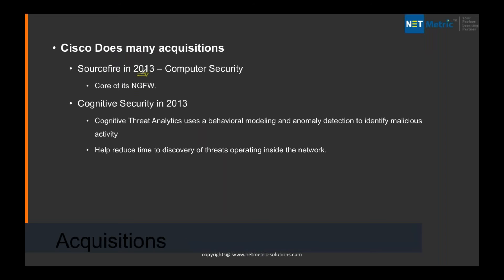In July 2013, Cisco did the first major acquisition of Source Fire, a computer security company doing next-generation firewall. They also acquired Cognitive Security, which uses behavioral modeling and anomaly detection to identify malicious activity and reduce the time to discover threats operating inside the network. Cognitive Security was a good acquisition, drastically reducing detection time.